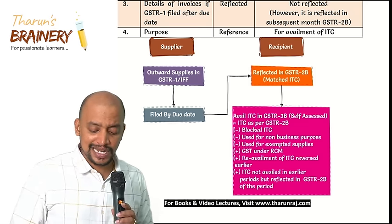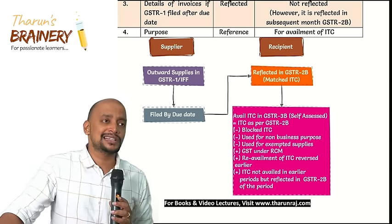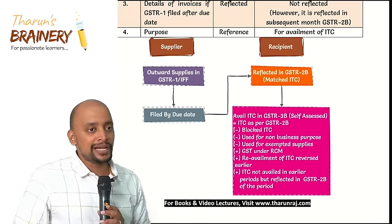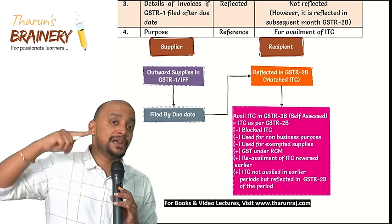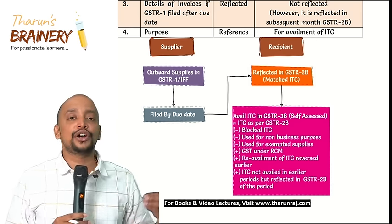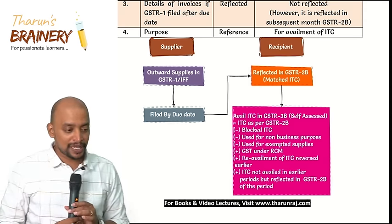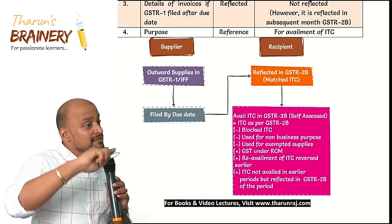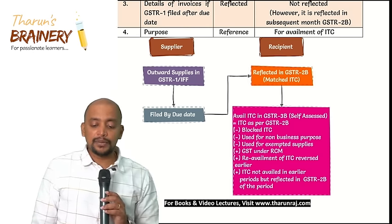The three additions to self-assessed ITC are: first, GST paid under RCM - whatever GST we pay under RCM, we can avail it as ITC in the same month itself. Very important: ITC availed from RCM cannot be adjusted against RCM liability; it can only be adjusted against FCM liability. RCM liability must always be paid using the electronic cash ledger. RCM transactions may not appear in 2B since the recipient pays the taxes and the supplier may not add those invoices in GSTR-1.